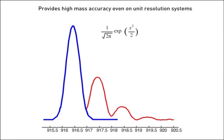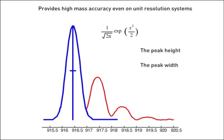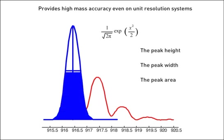Knowing the spectral line shape also allows highly accurate calculation of the peak height, the peak width, and the peak area. These are all easily calculated because we have calibrated the spectrum to a defined line shape. Note that we can also easily deconvolve the data when the monoisotope peak is not well resolved, or even when other interfering ions are present. This is another reason MassWorks can provide accurate mass on unit resolution systems.